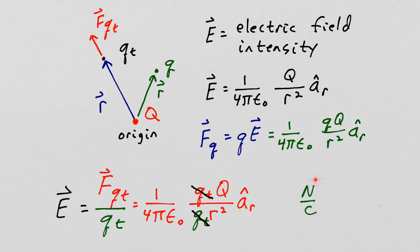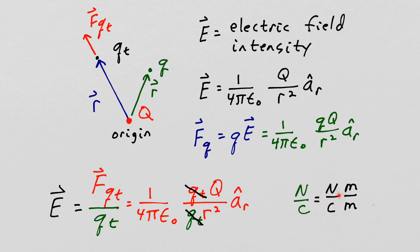Newtons per coulomb is a valid unit for the electric field intensity but it's not the most common unit. Let's multiply newtons per coulomb by meters over meters.